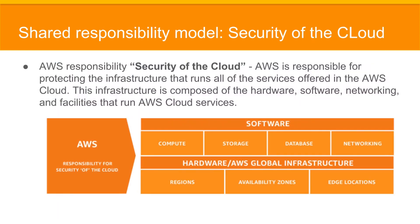Amazon Web Services is responsible for protecting the infrastructure that runs all of the services offered in the Amazon Web Services cloud. This infrastructure is composed of the hardware, software, networking, and facilities that run AWS cloud services. Under software, services can be compute, storage, database, and networking, and hardware includes regions, availability zones, and edge locations.